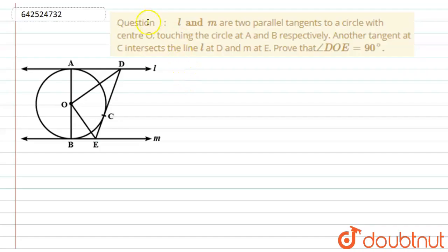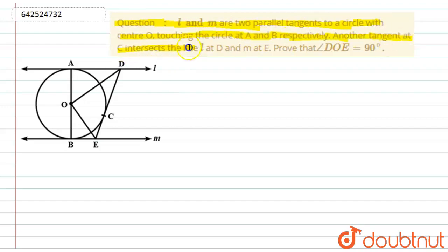Hello students, let us start with the question. We have given that L and M are two parallel tangents to a circle with center O, touching the circle at A and B respectively. Another tangent at C intersects line L at D and M at E. We need to prove that angle DOE equals 90 degrees.